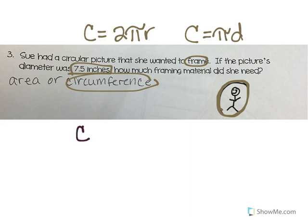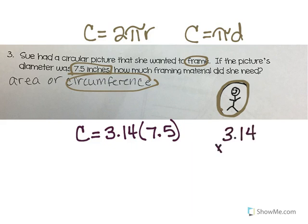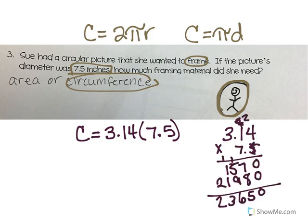So I'm going to use C equals 3.14 times 7.5. I'm going to multiply that and remember to count all my decimal places — 1, 2, 3 — so 1, 2, 3 decimal places. That's going to be 23.55. And that's talking about inches. It's not square inches because I'm not covering it — it's just inches because it's linear, it goes around there. So my answer is 23.55 inches of framing material.